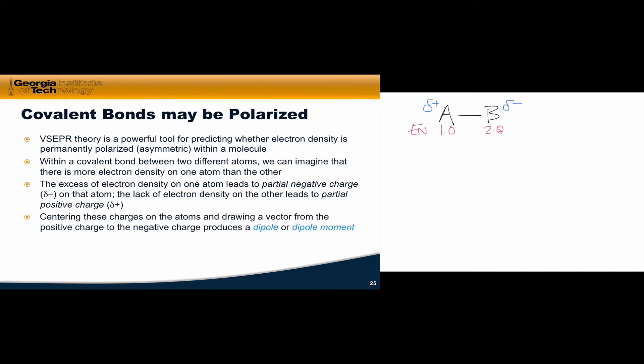If we imagine these charges on the atoms themselves, so the full partial positive charge on A and the full negative partial charge on B, and draw a vector from the center of atom A to the center of atom B, we get what's called a dipole or a dipole moment. You might also hear this referred to as a dipole vector.